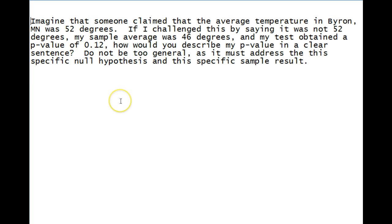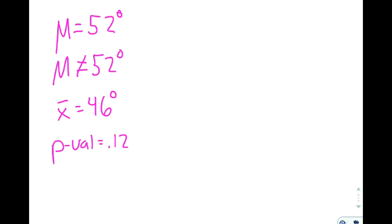Let's go ahead and look at what notes I've been writing down as I've read through this. I have mu equal to 52, mu not equal to 52. This would be my null. This would be my alternative hypothesis. Then I have my sample data, my x-bar is equal to 46 degrees, and my p-value of 0.12.